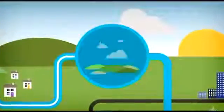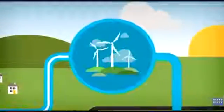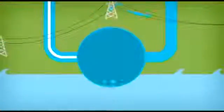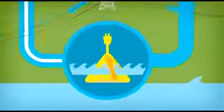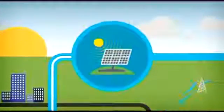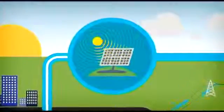Wind power can harness the wind to turn the turbines and generate electricity. Hydropower uses the power and weight of water to turn the turbines. Solar power can also be used to generate electricity by capturing the sun's energy.